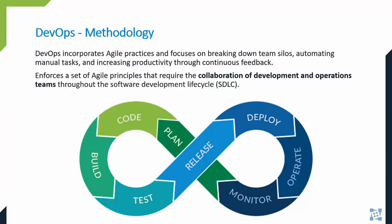DevOps automates the software development process by managing all the tasks that people are working on while keeping it all together in an orderly fashion. In a few words, DevOps mechanizes and automates manual tasks, breaks down team silos, and increases productivity. It complements scrum. I'm sure you have all seen the infinity symbol with the various stages in development, which graphically represents a continuous and iterative approach.